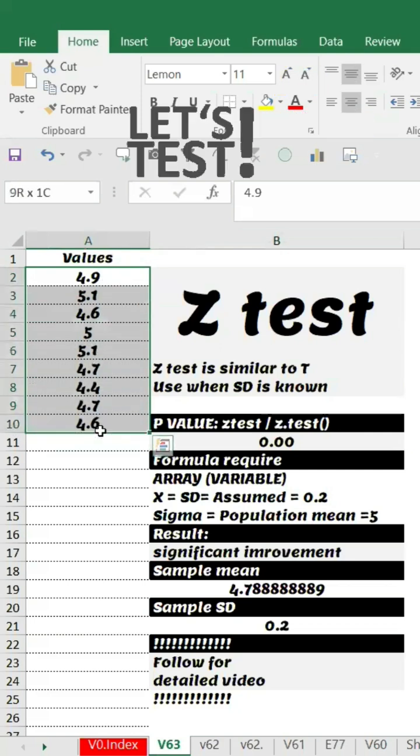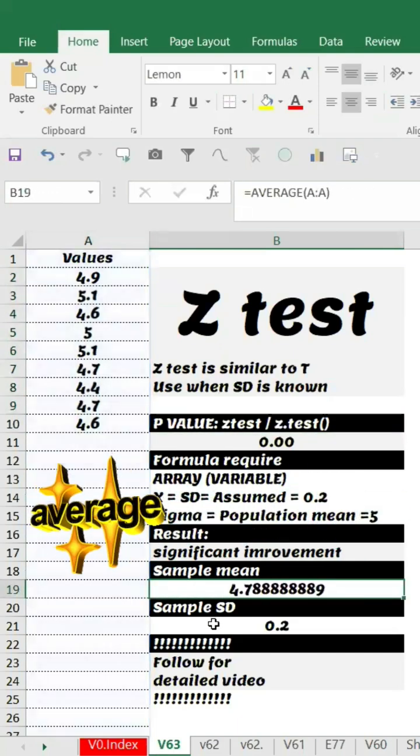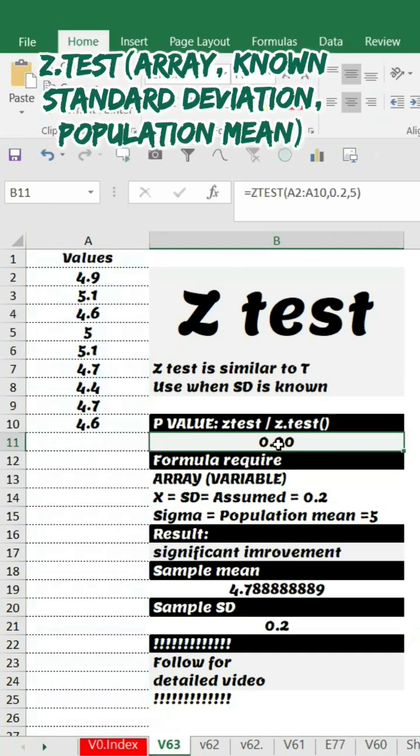This is the value I have. I'm going to test whether this is significant or not. First, this is the mean value, you can see here, and then this is the standard deviation of 0.2. What I can do is directly apply the formula.